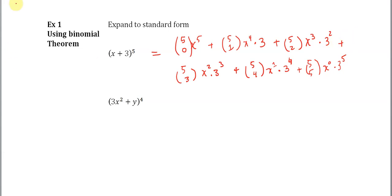So now we have to do some number crunching here. 5 choose 0 is just 1, so that's just x to the fifth. 5 choose 1 is 5 times 3, so that gives me 15x to the fourth. Plus 5 choose 2, which is 10 times 3 squared, which is 9. 10 times 9 is 90x to the third.